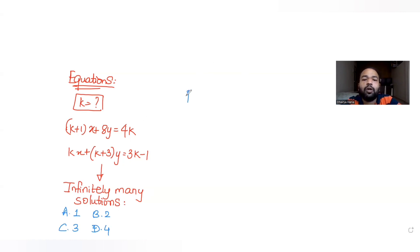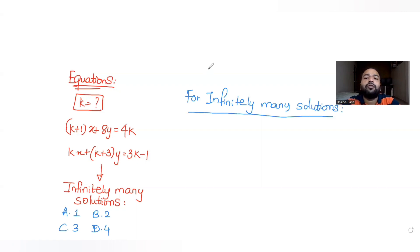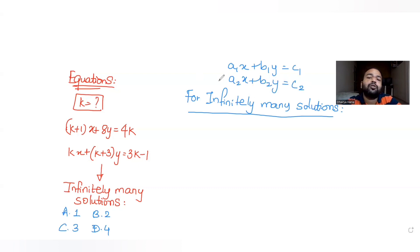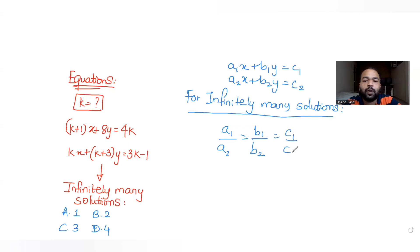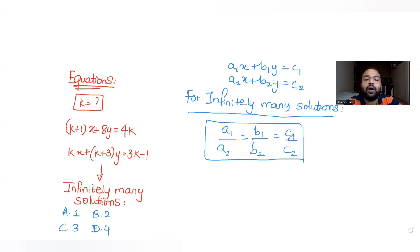For infinitely many solutions, if the two linear equations are of the form a1·x + b1·y = c1 and a2·x + b2·y = c2, the condition is: a1/a2 = b1/b2 = c1/c2, where a1, a2 are coefficients of x; b1, b2 are coefficients of y; and c1, c2 are the constant terms.